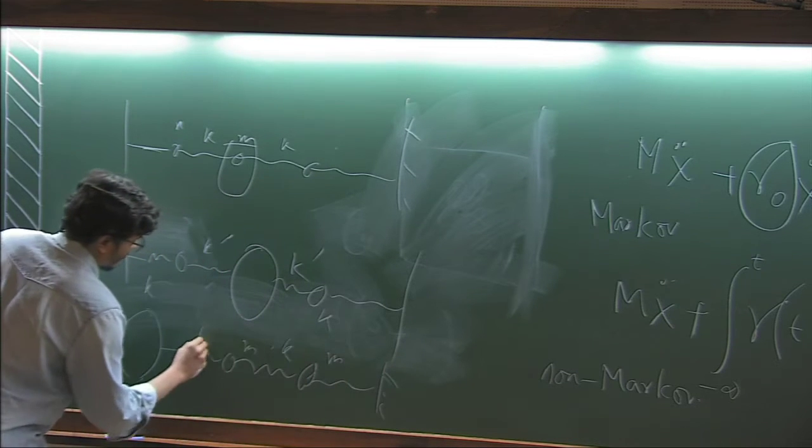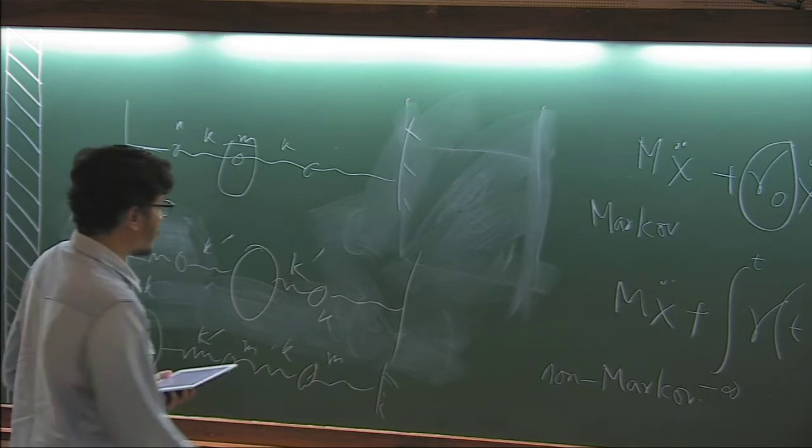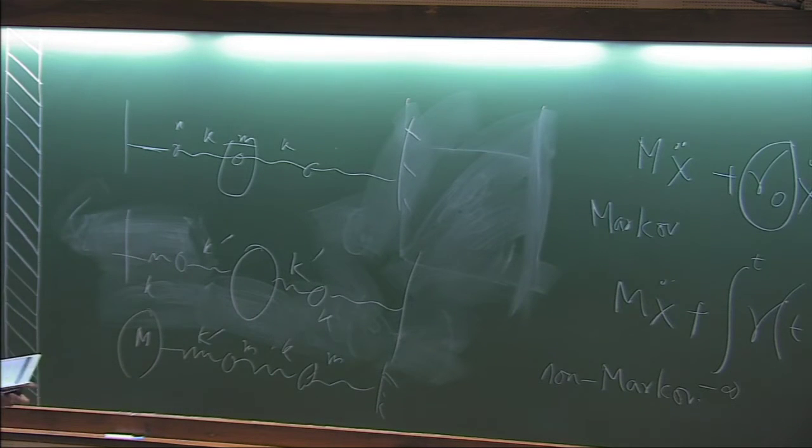So this is m, this is k, this is m, this is k prime, this is capital M. So we have room to do all the things like m equals to M, k prime equals to k.